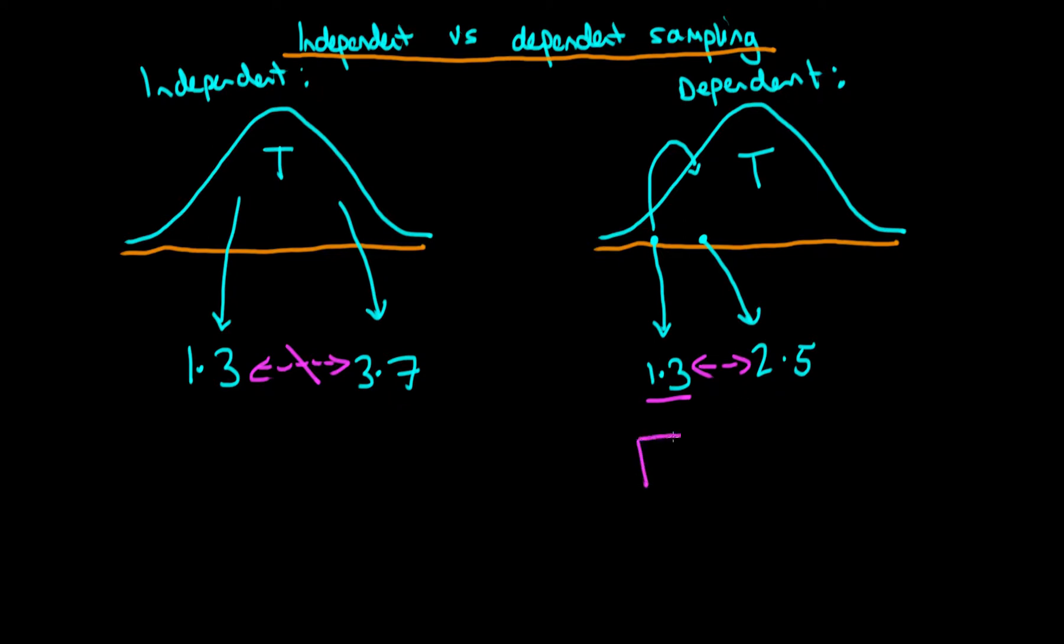Indeed, with dependent sampling we can imagine apportioning the incremental information for an additional sample into two different sources. There is a part of the information which is due to the fact that these samples are coming from T, but there is also information which comes from the previous sample.